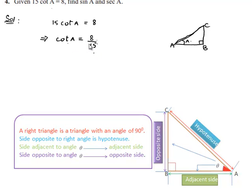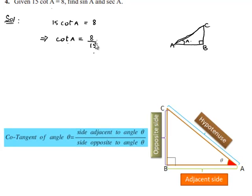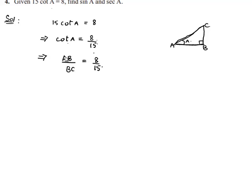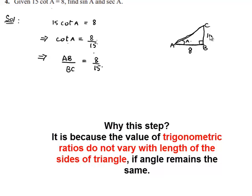We know that cot of an angle is nothing but the ratio of its adjacent side by opposite side. We can write cot A as the adjacent side of angle A is AB here, by the opposite side of angle A here is BC, which is equal to 8 by 15. So here we can write AB as 8 and BC as 15.